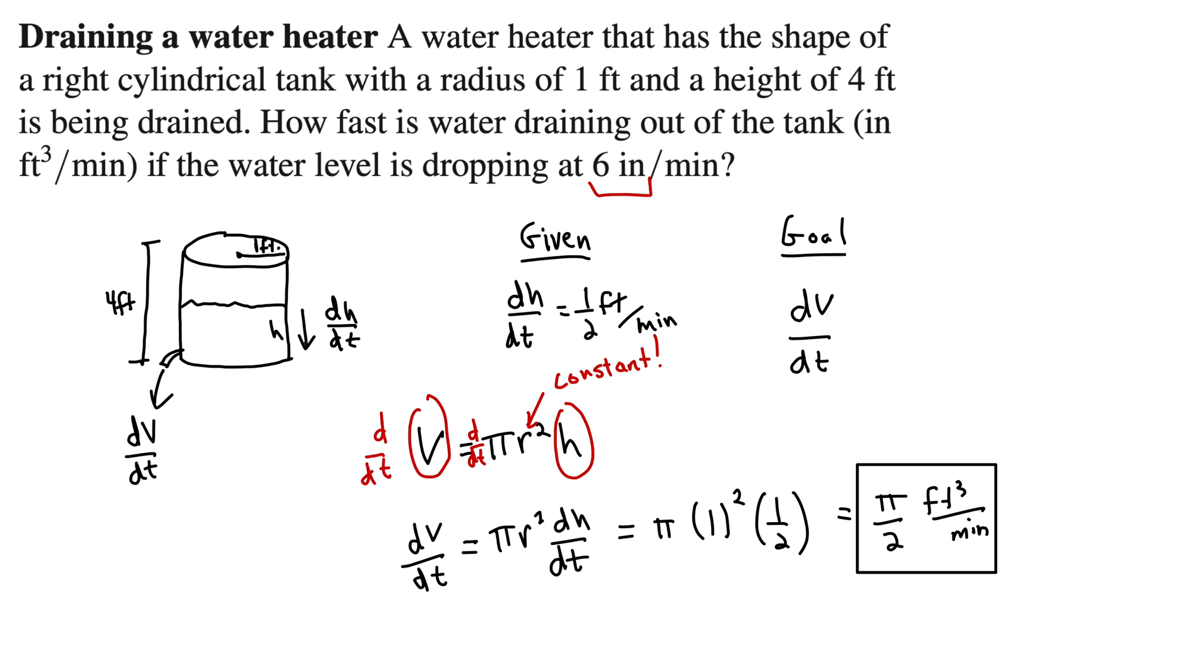Is that at least in the ballpark of what we'd expect if it's draining at half a foot per minute? And we're just looking to make sure we're in the ballpark of what we'd expect, right? So I'd say, yeah, we're there. The water level is dropping at half a foot per minute. Water's coming out of this thing at about one-and-a-half cubic feet per minute. That's fine. At least ballpark. If we would have gotten 1,200 cubic feet per minute, that's where you want to go back and figure out what went wrong.